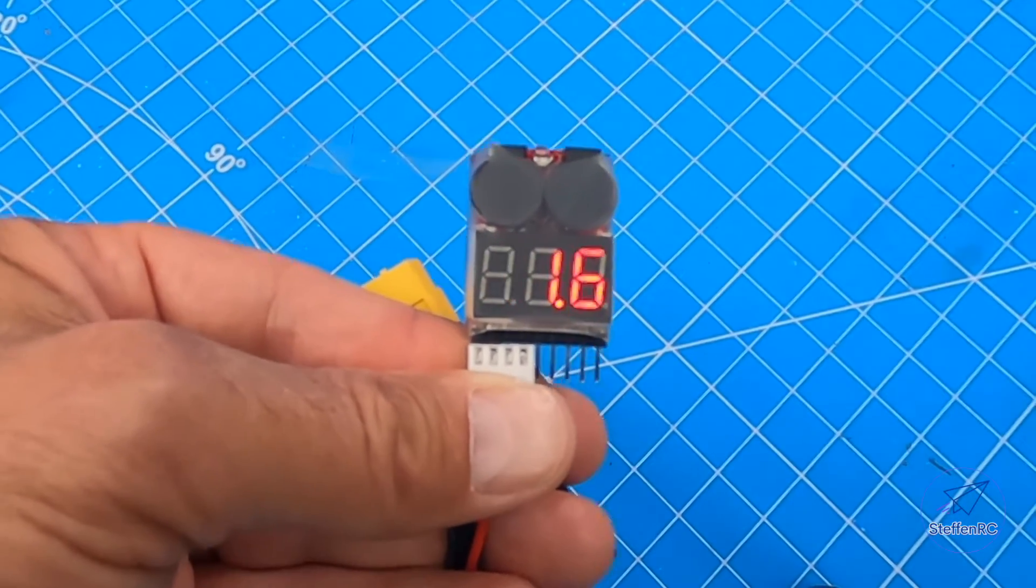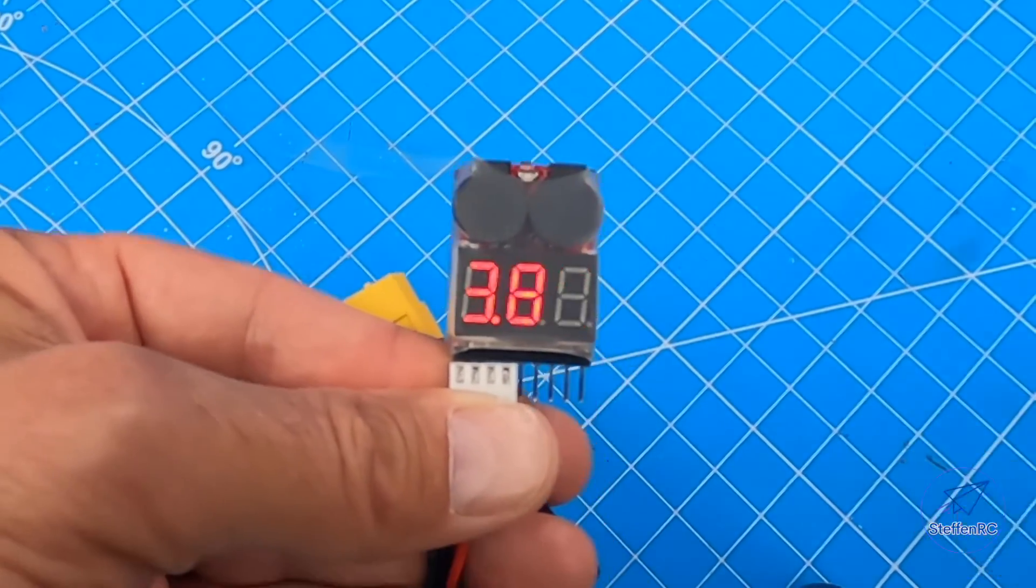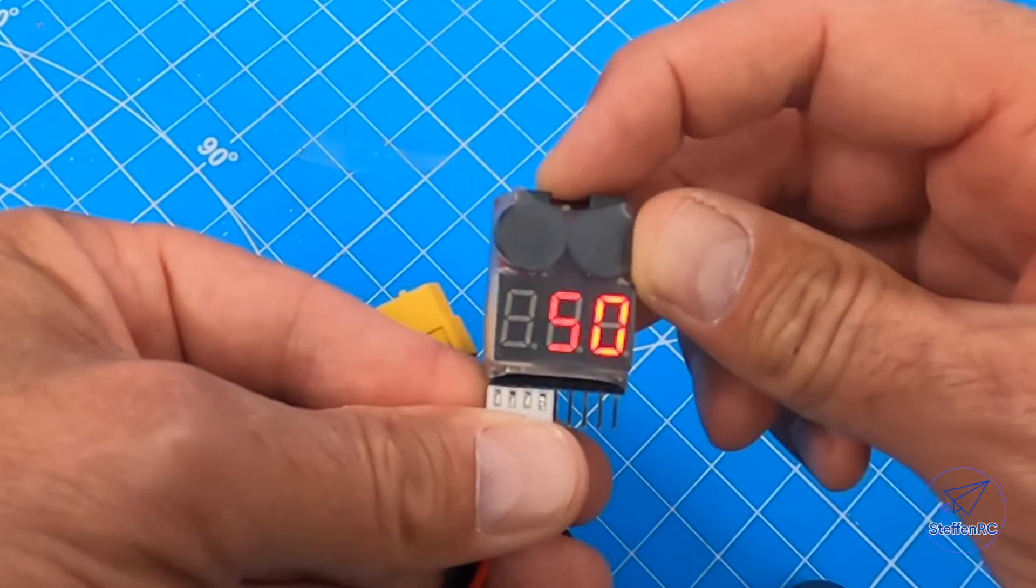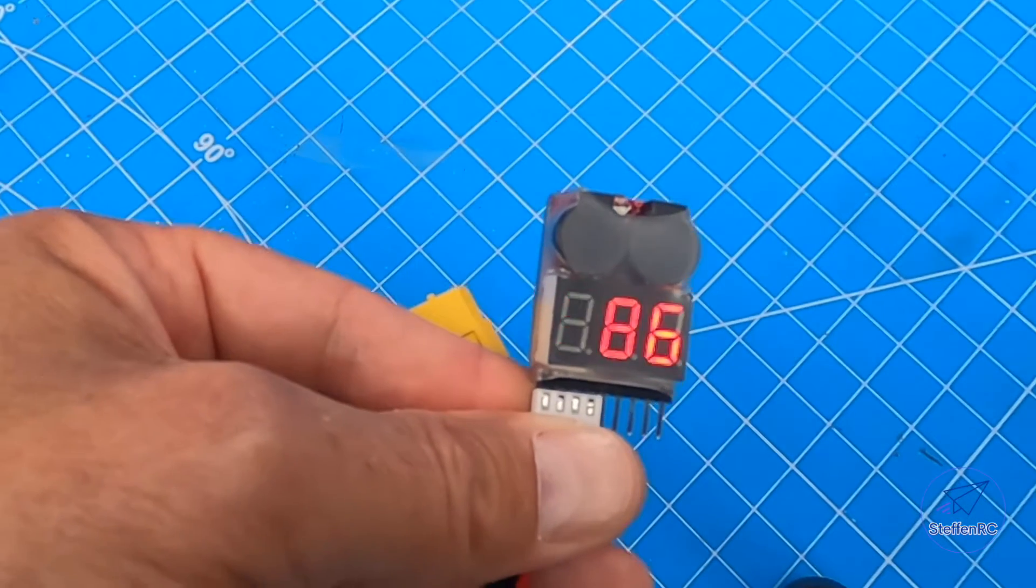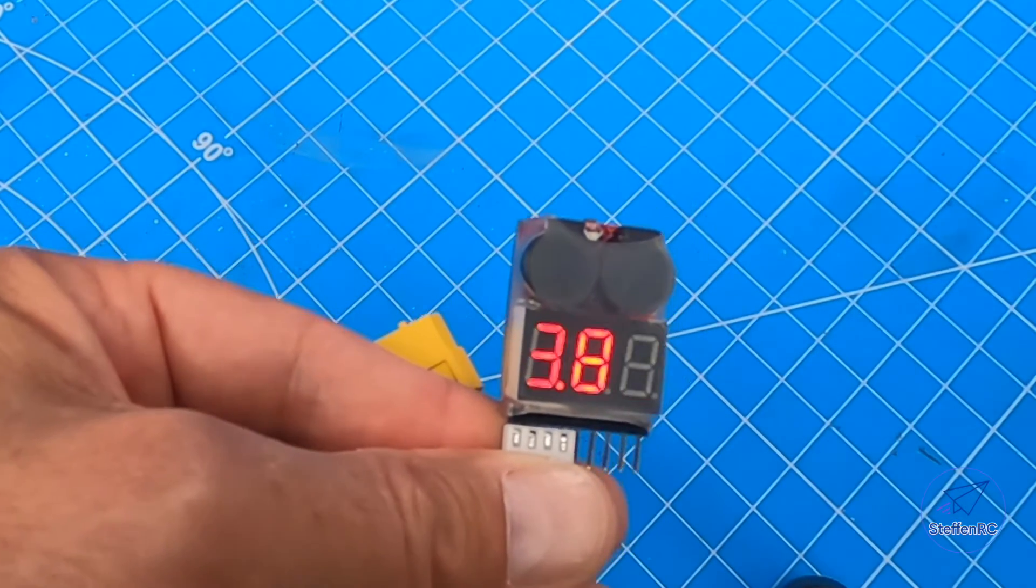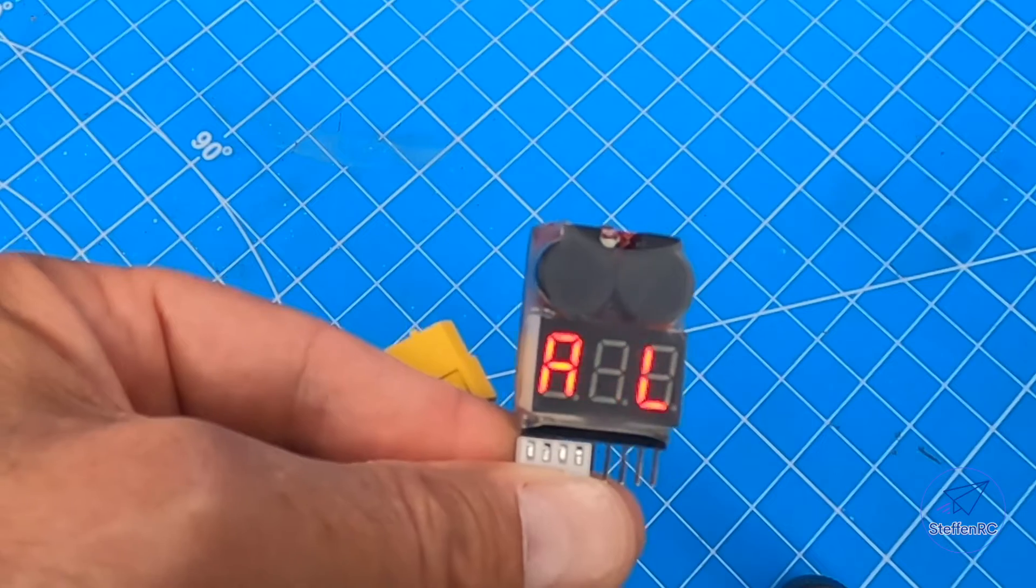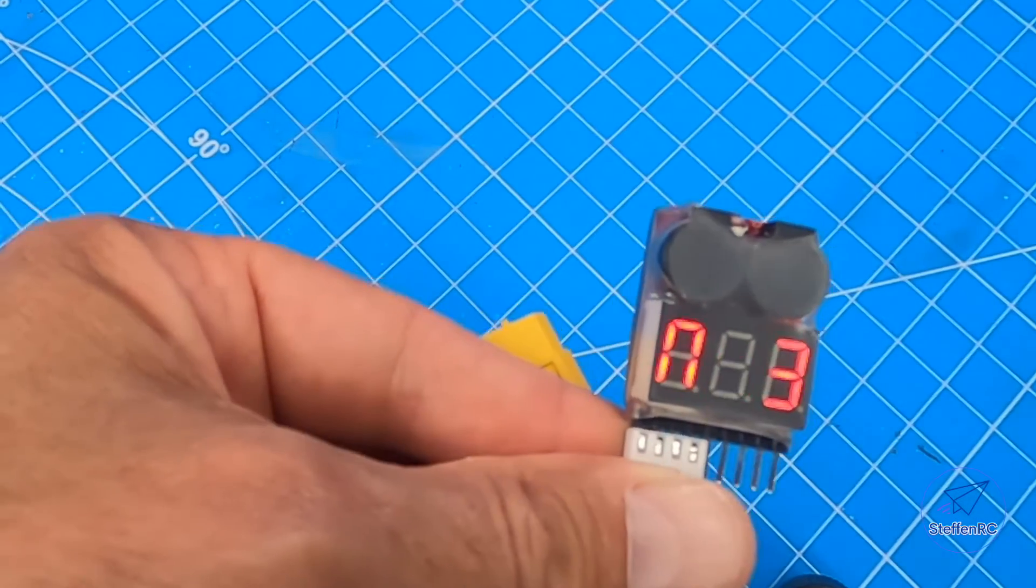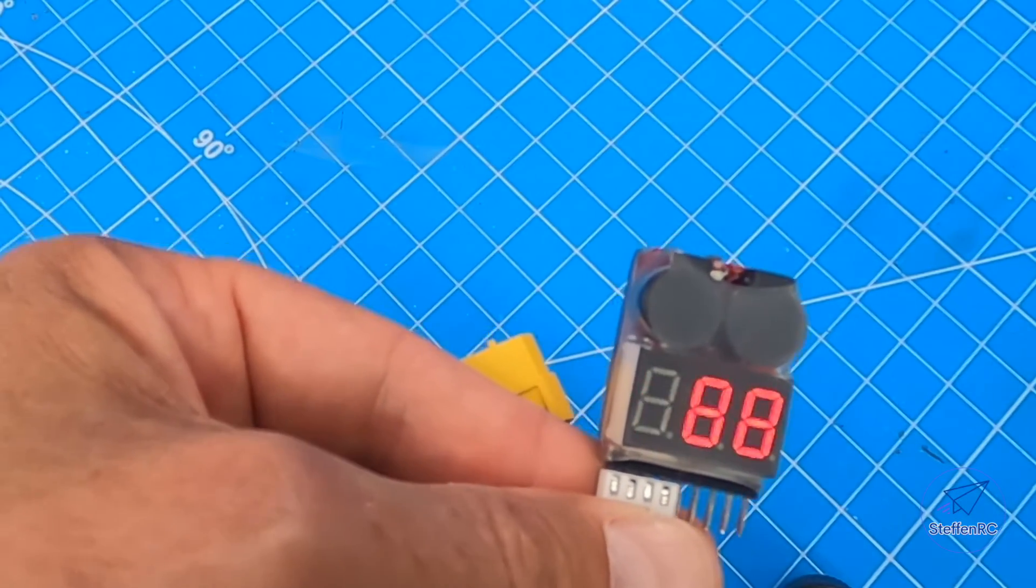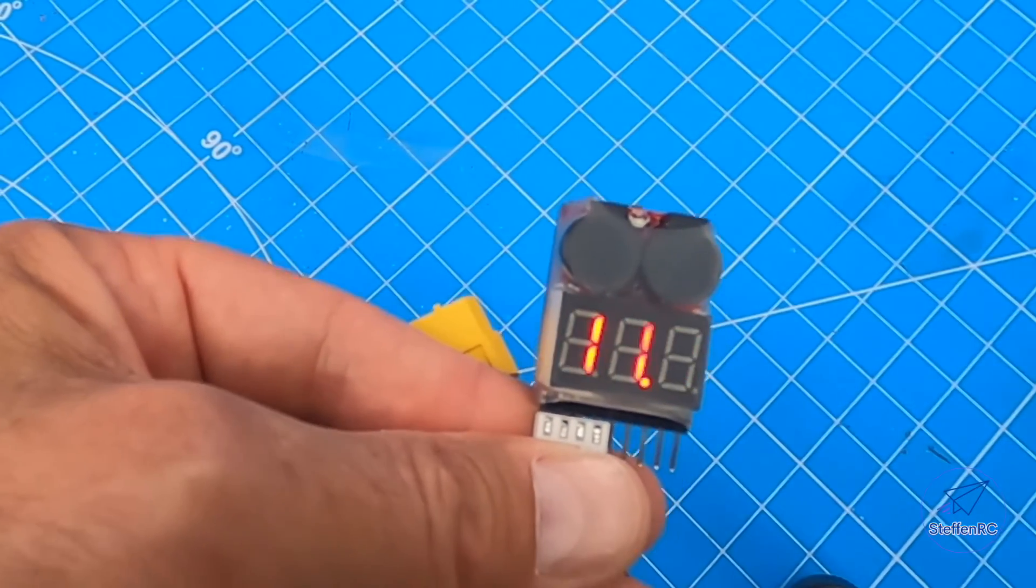But the real cool part is this. You put this in a plane, you fly it, and prior to that, you've set this for 3.6 volts. So if one of the cells gets below 3.6 volts, the alarm goes off. Back off the throttle and let the pack recover. Guess what? The alarm stops.